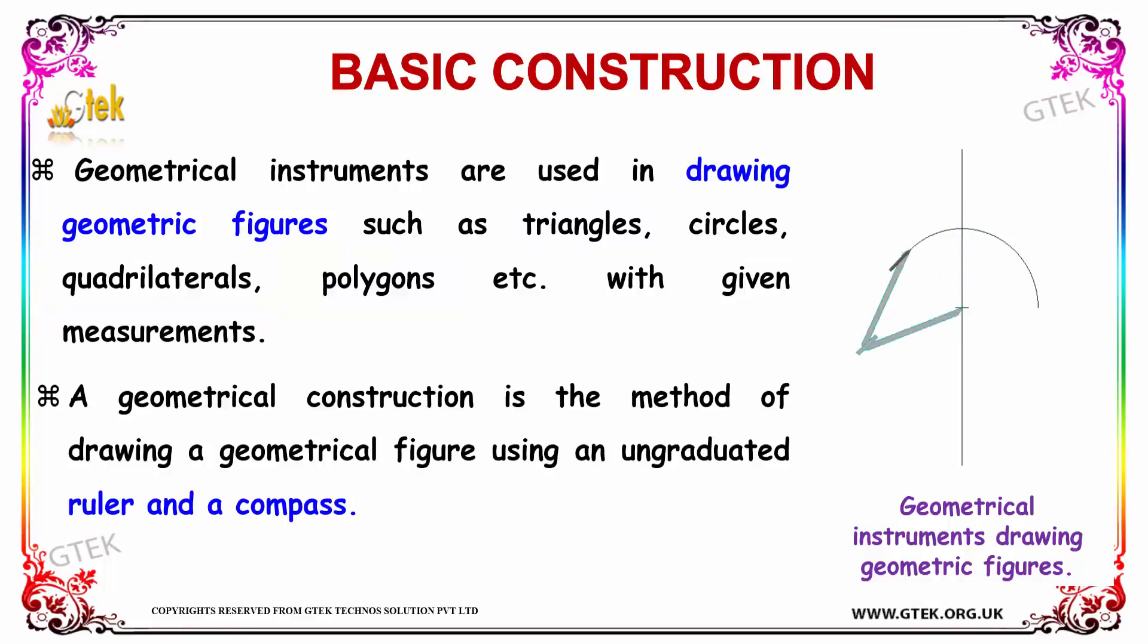Apart from this, a geometrical construction is said to be a methodology of drawing a geometrical figure using an ungraduated ruler and a compass. You can see over here how the depiction of ruler along with a compass is defined. This is one such depiction of how a geometrical figure by using the geometrical instruments is made.